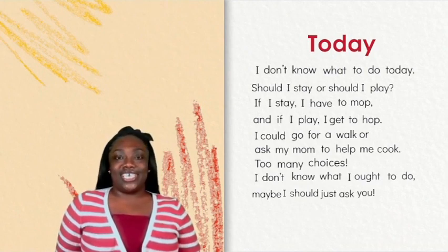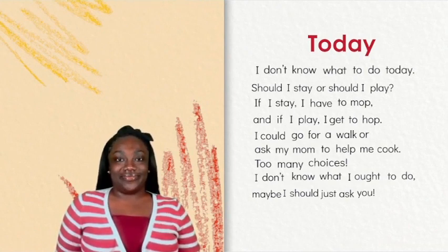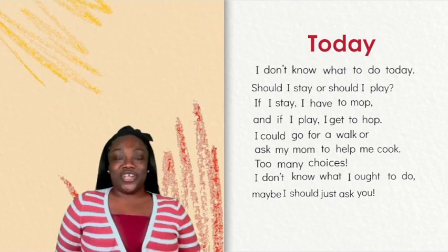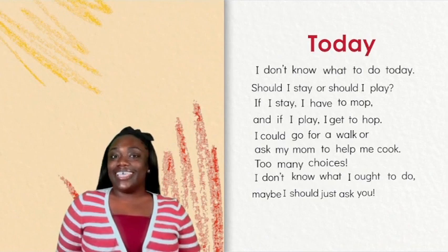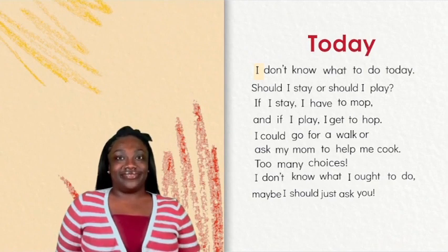How many words do you see in the first line of our poem? There are seven words. What is the first word in this line? The first word is I. What is the last word of the first line in this poem? The last word in this line is today.